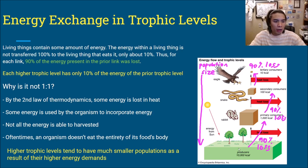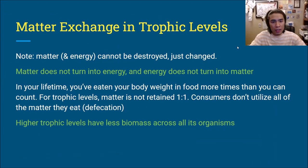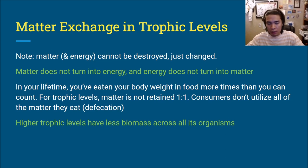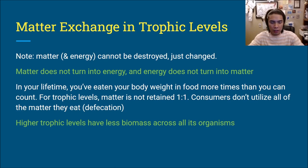In a given ecosystem, you might have a ton of biomass of plants but only eight eagles. Matter is also changing trophic levels — matter and energy cannot be destroyed, just changed. Matter does not turn into energy and energy does not turn into matter. Consumers don't utilize all the matter they eat; much is passed through defecation. So higher trophic levels have less biomass across all their organisms compared to lower trophic levels.